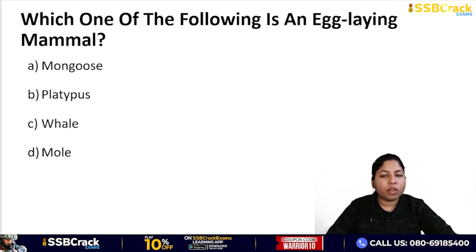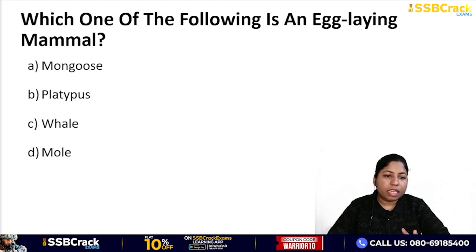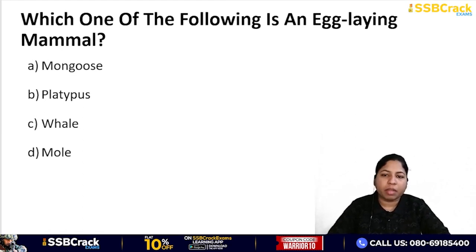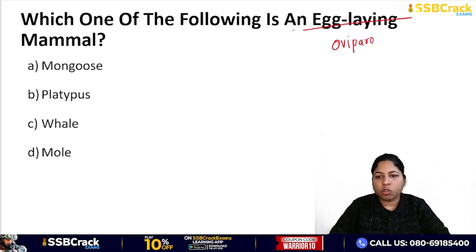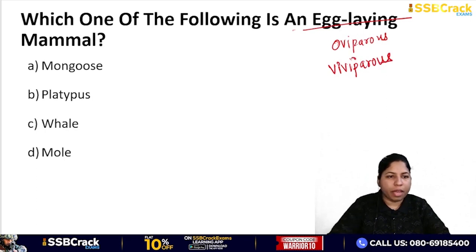Next question: which of the following is an egg-laying mammal? Options: mongoose, platypus, whale, or mole. Egg-laying mammals are called oviparous, while those that give birth to young ones are called viviparous. The correct answer is platypus, which is an oviparous mammal.